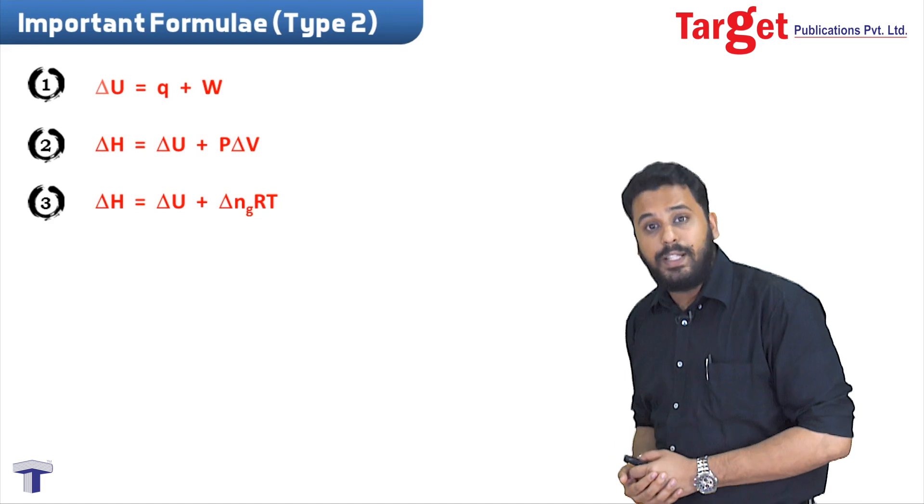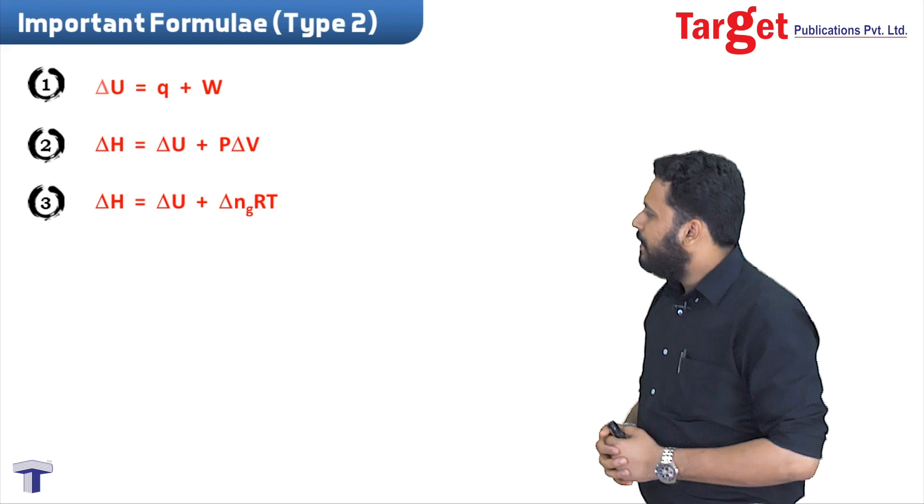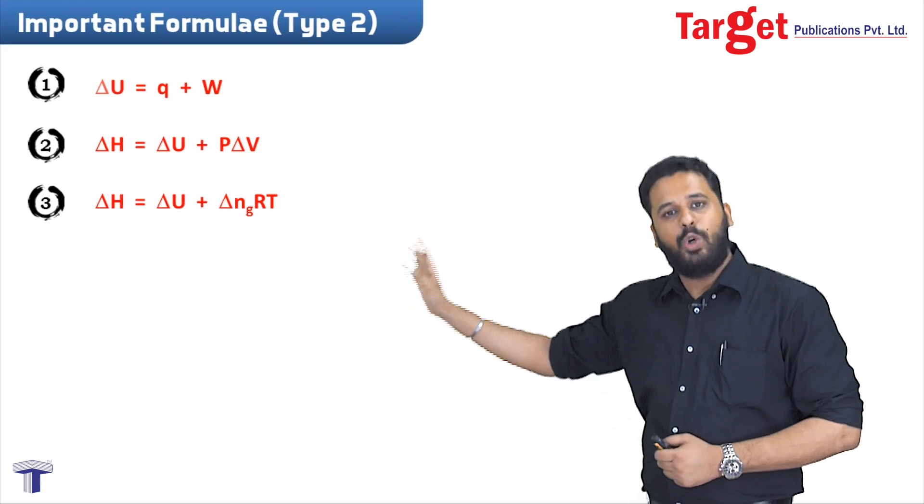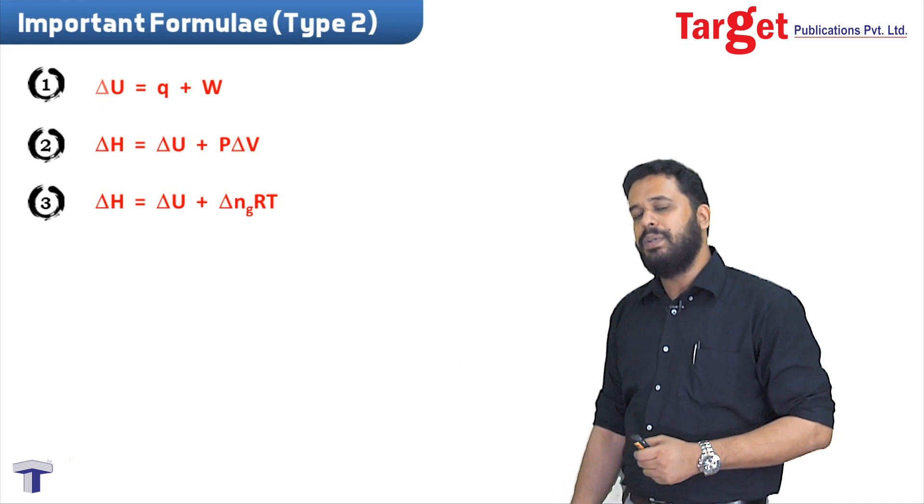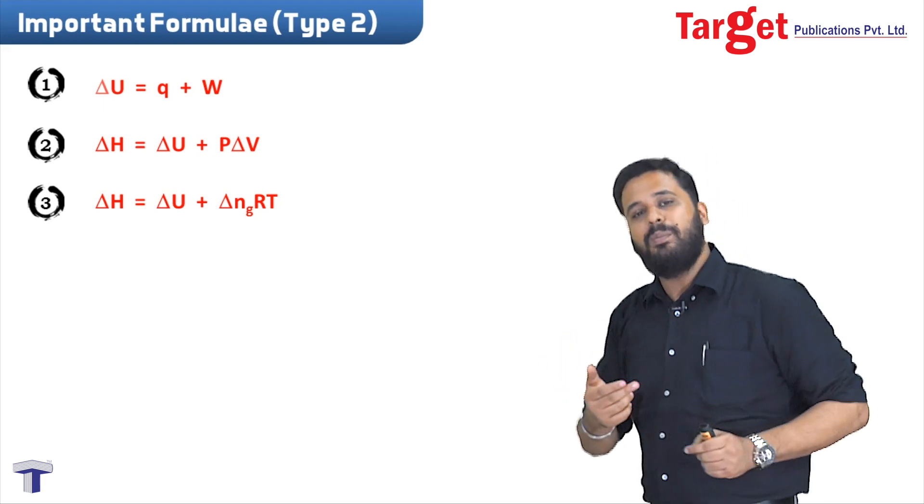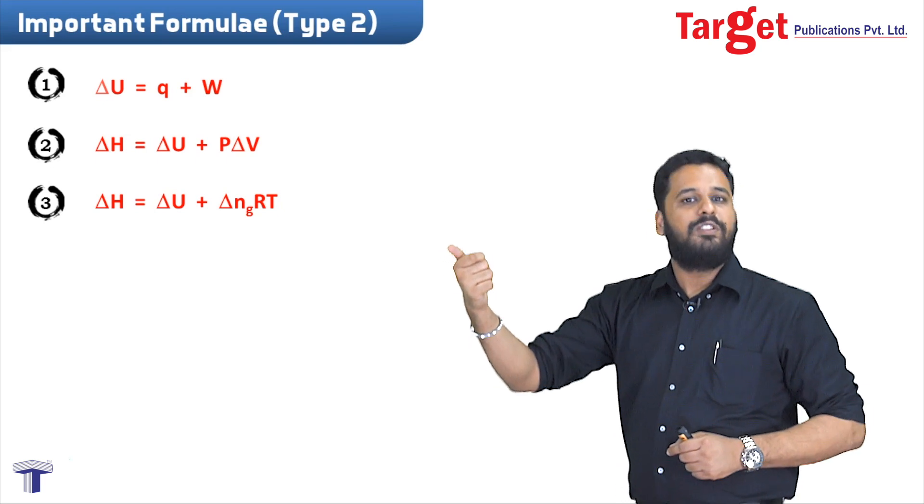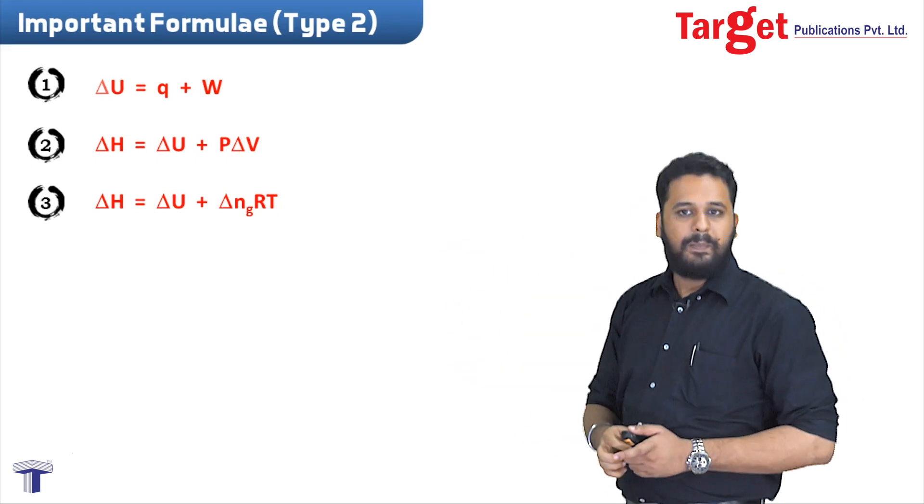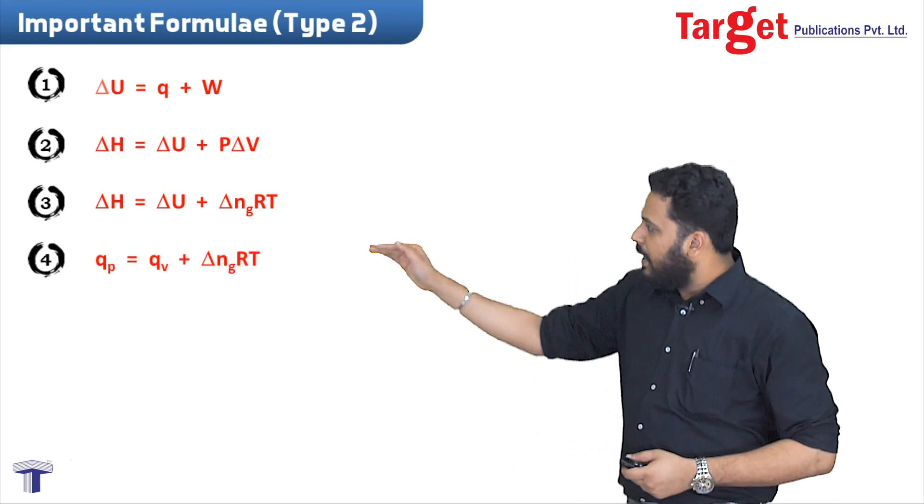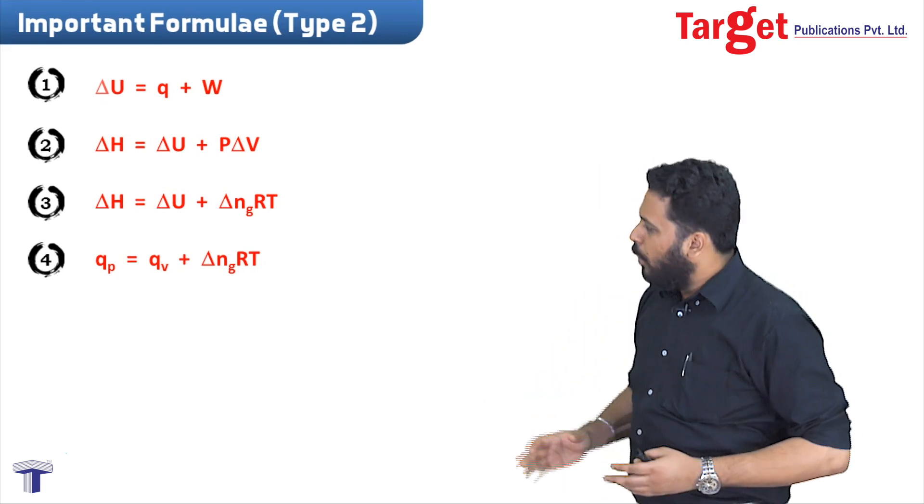When a chemical reaction occurs, we can tweak this equation and write it as delta H equals delta U plus delta n_g RT. Remember delta n_g means change in the number of moles of gases. We ignore solids or liquids - only the change in number of moles of gases. Change is calculated as product minus reactant, so number of gaseous moles of products minus number of gaseous moles of reactants.